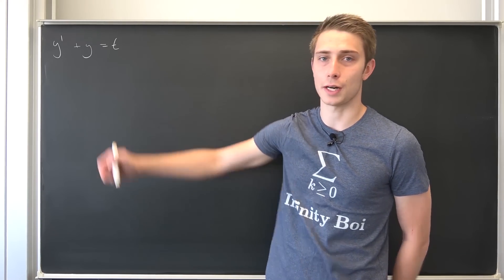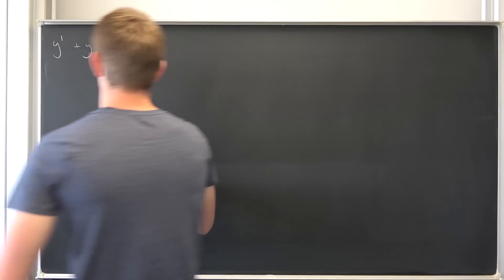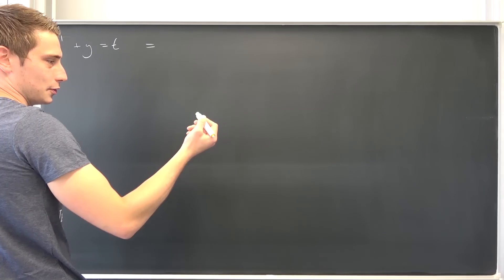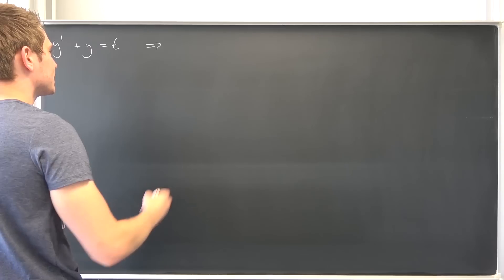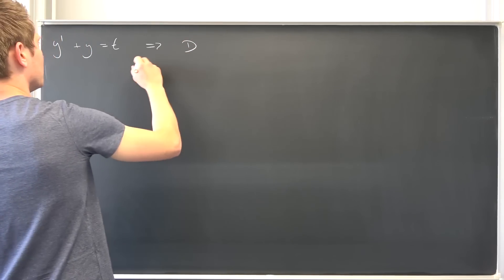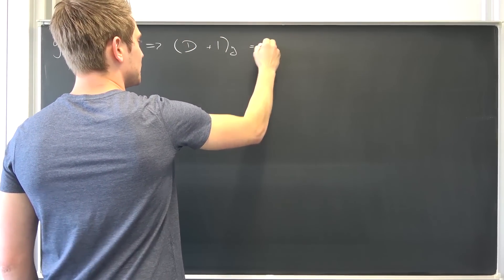Okay, so we are going to have this right here and we are going to write it as the D notation once again. Okay, so this right here is nothing but (D + 1) times y being equal to t.